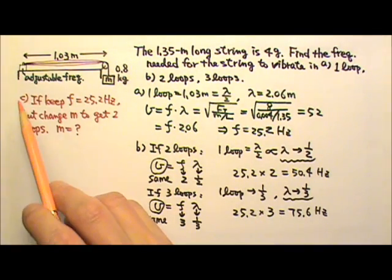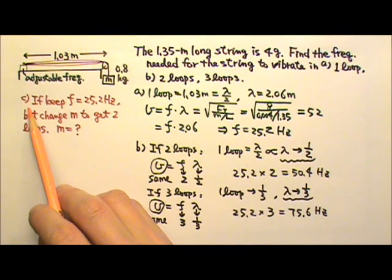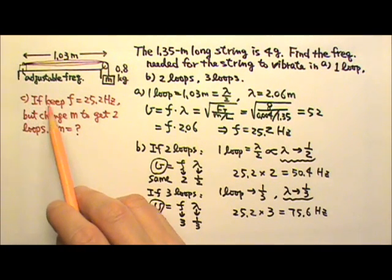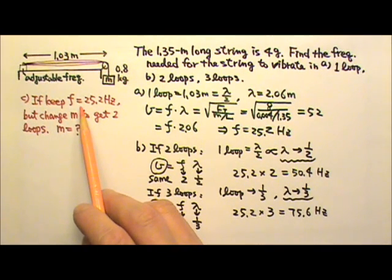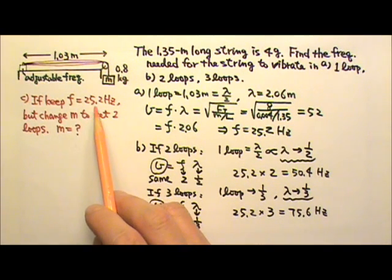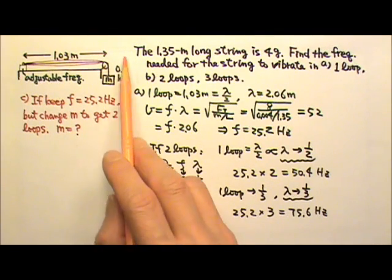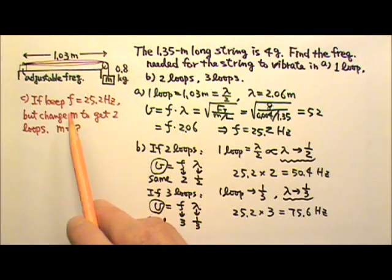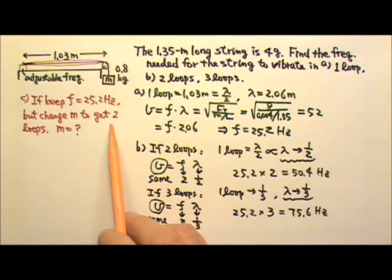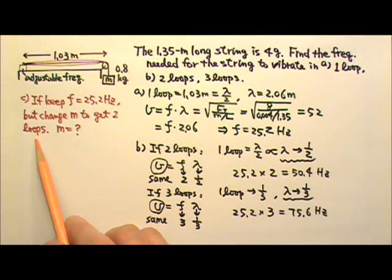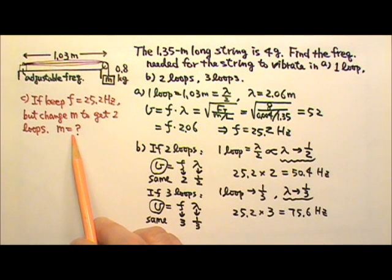Now let's add a part C. If I keep the vibrating frequency at 25.2 hertz but change the hanging mass so the string would oscillate in two loops, how much hanging mass is needed?